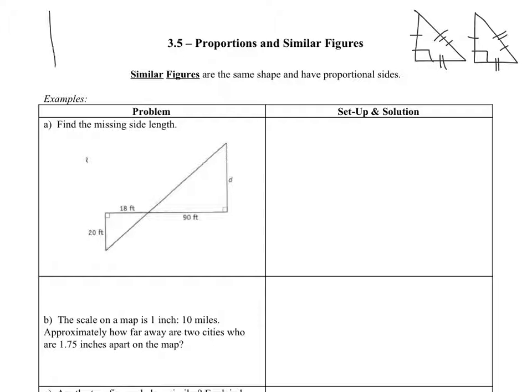Similar figures just means their sides have to be in proportion, such that if I set up a ratio, A is to B as C is to D. Now you can also write a proportion A is to C as B is to D, or A is to B as C is to D.